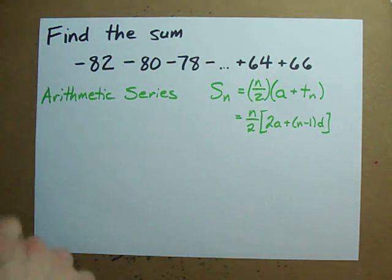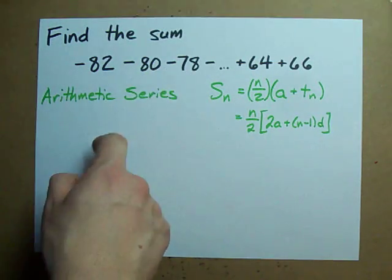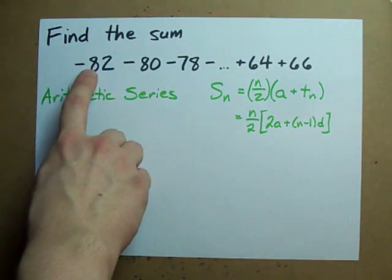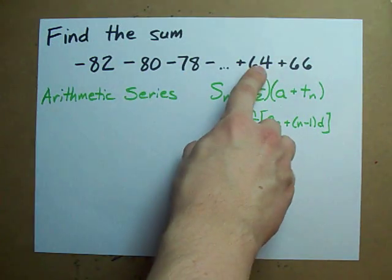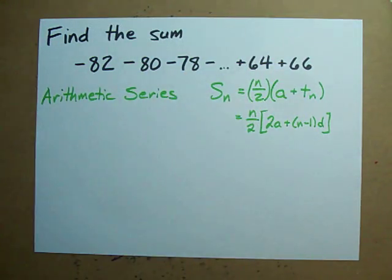What you'll notice is that these numbers make up an arithmetic sequence in that negative 82, add 2, add 2, add 2 to get to the next term.